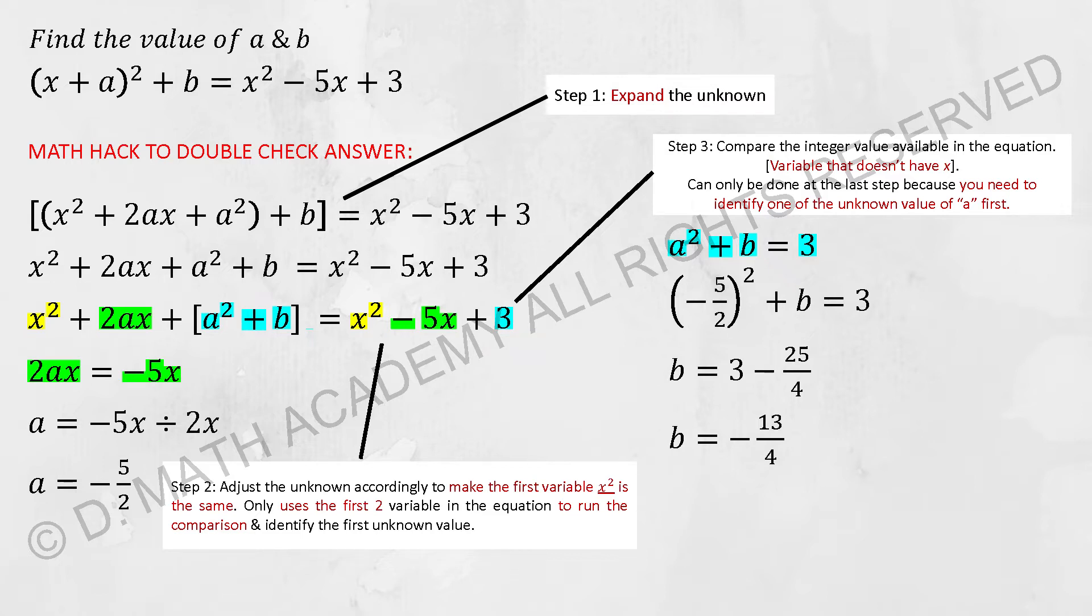I purposely highlight it with yellow, green, and blue so that you know which one is corresponding to which. So 2ax equals to -5x, a would actually be -5/2.